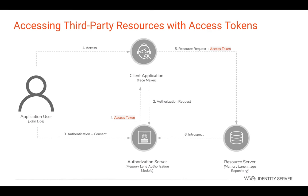Let's look at the sample scenario in detail. As previously discussed, granting full access to Facemaker is not a secure measure as we might encounter security concerns. When the resource owner John Doe wants Facemaker to access the resources in MemoryLane, Facemaker redirects John Doe to the MemoryLane authorization server. The MemoryLane authorization server checks whether John Doe has consented to allow Facemaker to access the resources. John Doe will have to log in to MemoryLane to authenticate himself and consent Facemaker to access the MemoryLane resource server. In return, the MemoryLane authorization server sends an access token to the Facemaker client application.